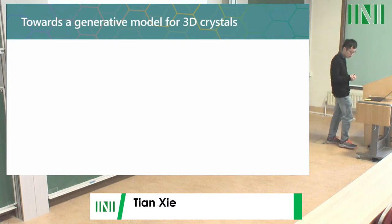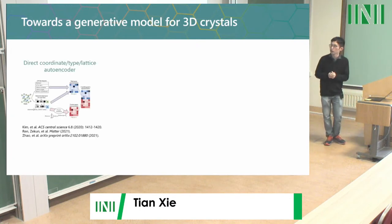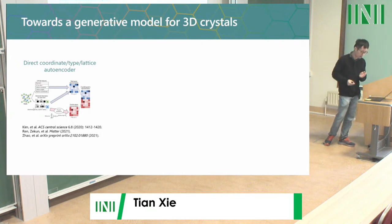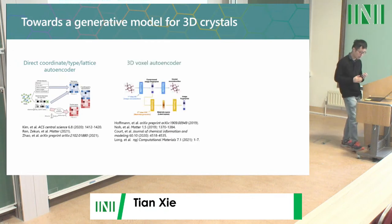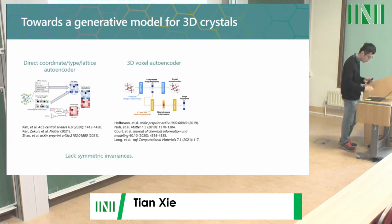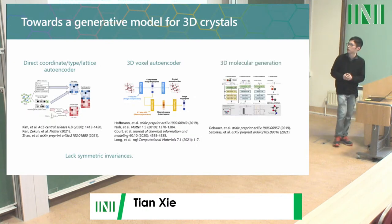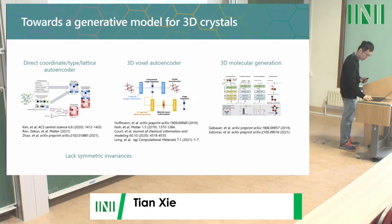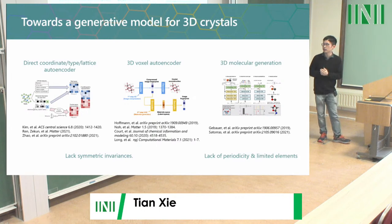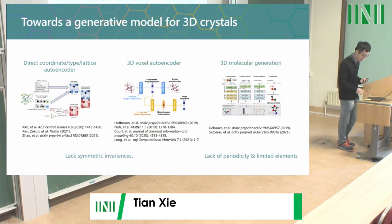There has been a lot of prior work generating 3D material structures, but all have limitations. Some directly concatenate all vectors into a long vector to generate materials. Others treat 3D structure as a 3D voxel image. Both lack the required symmetrical invariances. Work on generating 3D molecules for drug design doesn't properly handle periodicity and is limited to elements like carbon, hydrogen, and oxygen rather than the full periodic table.